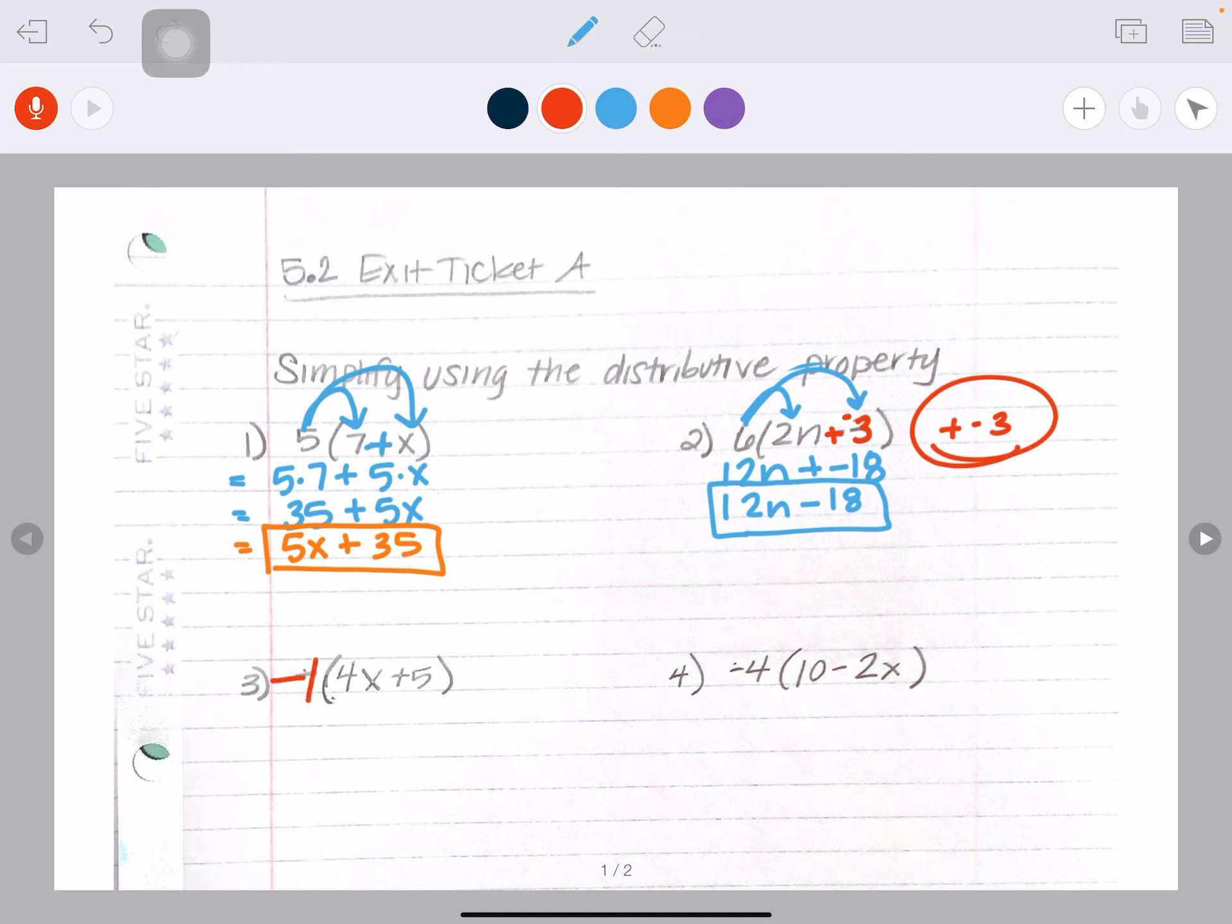And then I have this plus. And then I have negative one times five. So I have negative one times four, negative four, and they are x's. Plus I have a negative one times a five, which is a negative five.